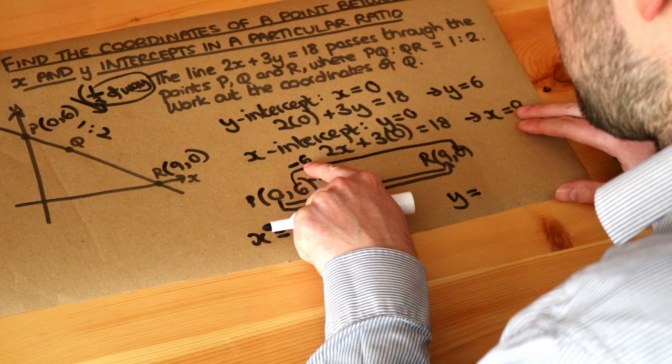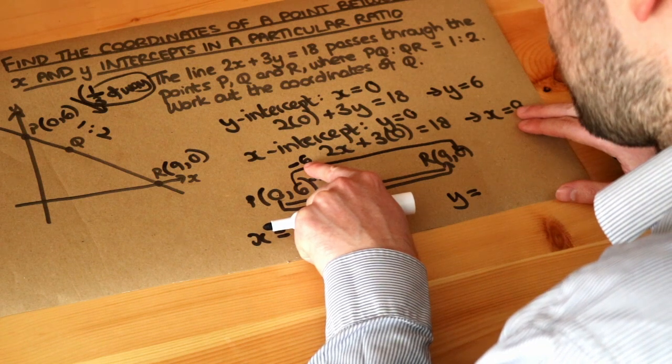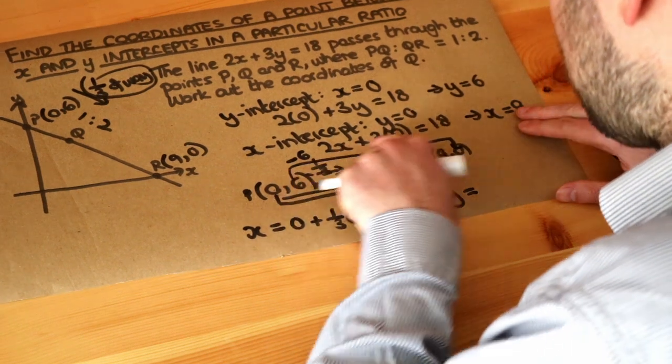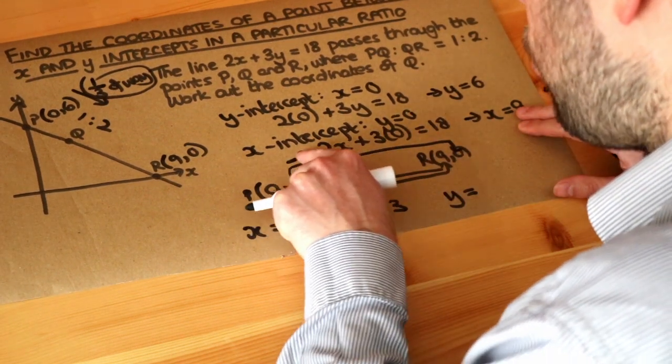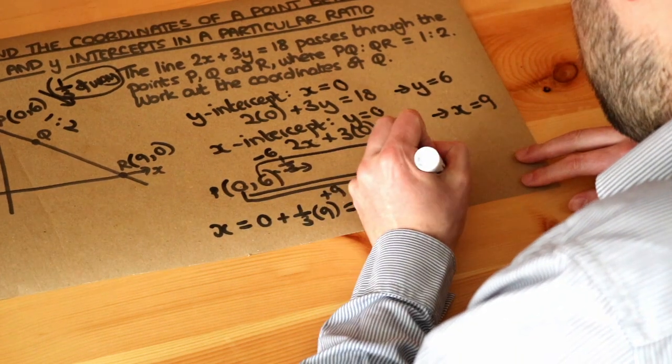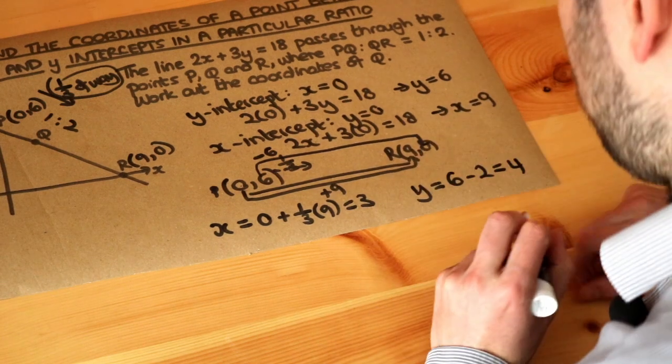What's a third of minus 6? Well, minus 2. So starting from 6, rather than going 6 down, we only go 2 down because we're going a third of the way. So we basically do 6 minus 2, which is equal to 4.